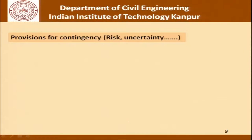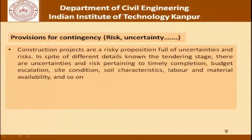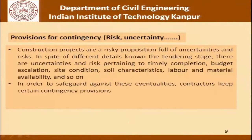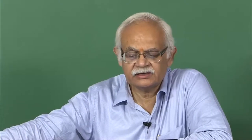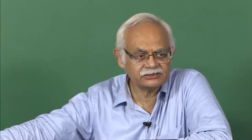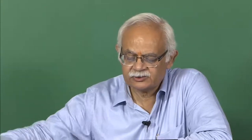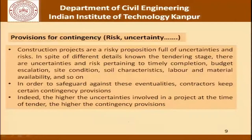Coming to provisions for contingency — risk and uncertainty. Construction projects are a risky proposition full of uncertainties: timely completion, budget escalation, site conditions, soil characteristics, labor and material availability, and so on. Contractors must keep certain contingency provisions as part of the markup pool. The higher the uncertainty at the time of tendering, the higher the provision for contingency. Importantly, if the contract is drawn up so that risks are more fairly shared and greater protection is afforded to the contractor, contingency provisions can actually be brought down.